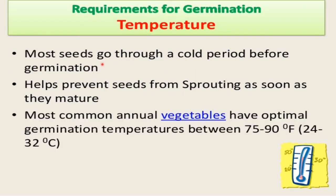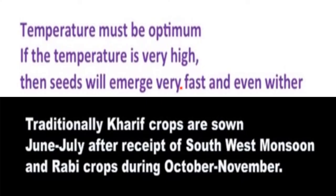Temperature is another requirement. Most seeds go through a cold period before germination, which helps prevent seeds from sprouting as soon as they mature. Most common annual vegetables have an optimal germination temperature between 75 to 90 degrees Fahrenheit, i.e., 24 to 32 degrees centigrade. Temperature must be optimum — if temperature is very high, seeds will emerge very fast and may wither. Traditionally, kharif crops are sown in June and July after the southwest monsoon, whereas rabi crops are sown during October–November.